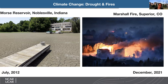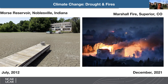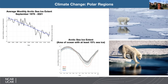Climate change has also brought increases in drought and fires. Morse Reservoir in Noblesville, Indiana was completely empty in July 2012. Wildfires like the Marshall Fire in Superior have been increasing year after year. There are also very large changes in the polar regions. The average monthly Arctic sea ice extent has declined from over 7 million square kilometers in 1979 to about 4.5 million today, affecting both people and animals living in those parts of the world.